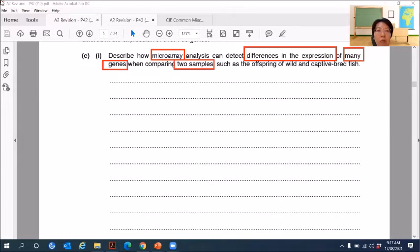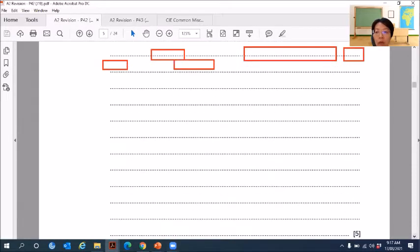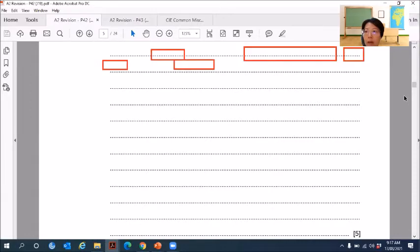So they ask you to use microarray to detect the differences in gene expression. So this is a very basic and direct question. First thing you want to see after looking at the keywords of the question, you check what is the total marks here. So the total marks here is five marks.